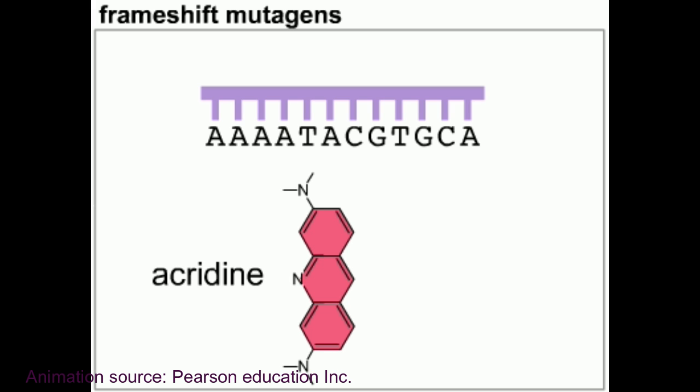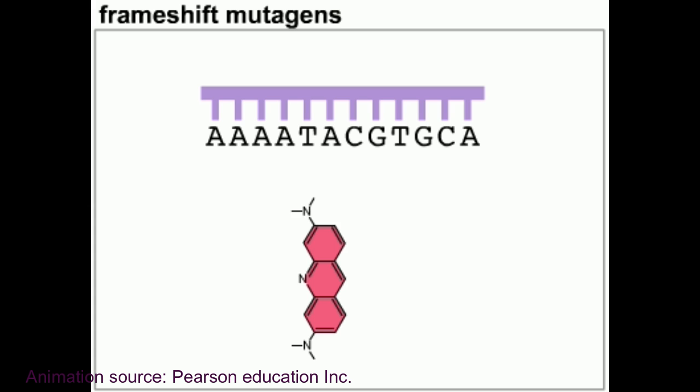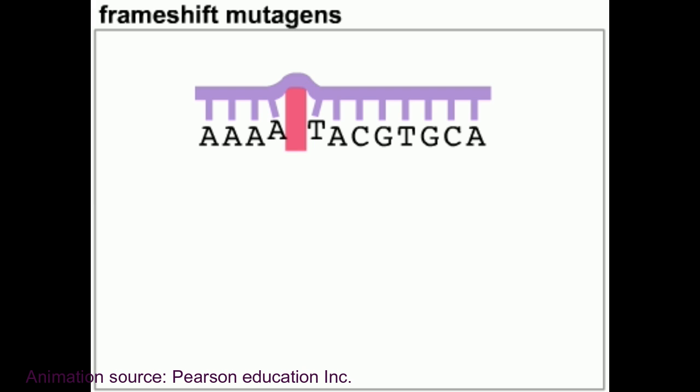Some chemical mutagens cause small insertions or deletions of nucleotide base pairs, which can lead to frameshift mutations. Examples of such frameshift mutagens include acridine, which is a dye commonly used for mutagenesis in genetic research; benzopyrene, which is found in smoke and soot; and ethidium bromide, which is useful in laboratories for staining DNA.